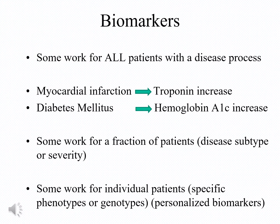In the field of biomarkers, some molecules work for all patients. For example, if somebody has an elevation in troponin, almost invariably this is associated with a myocardial infarction, or if somebody has elevated hemoglobin A1C, that person invariably has diabetes mellitus. Some other biomarkers only work for a fraction of patients, such as according to disease subtype or severity.